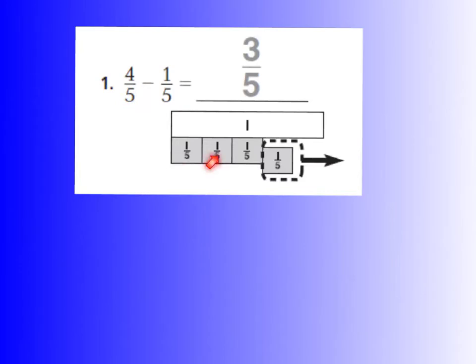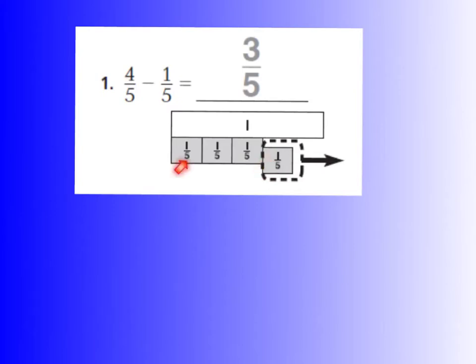Therefore, we have one-fifth, two-fifths, three-fifths, and four-fifths. Now if we were to subtract one-fifth using a model, we can draw it where we're taking one-fifth away. You can see that they made it look like they were cutting out the one-fifth and drawing an arrow to show that you're taking it away from the four-fifths. Therefore, four-fifths minus one-fifth leaves us with three-fifths remaining.